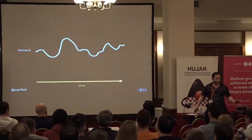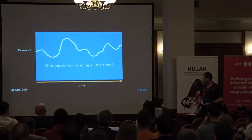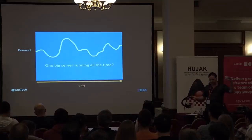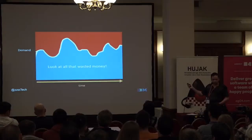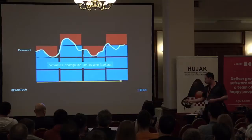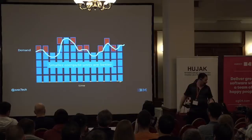A typical server-side application over time will see demand go up and down depending on when your customers visit. Do you buy one big server running all the time, sized to your peak capacity? That potentially means a lot of wasted money. The better option for any cloud-based application is to break it down into smaller compute units that you can scale up as demand increases and scale down when it decreases. This is basically the microservices model.